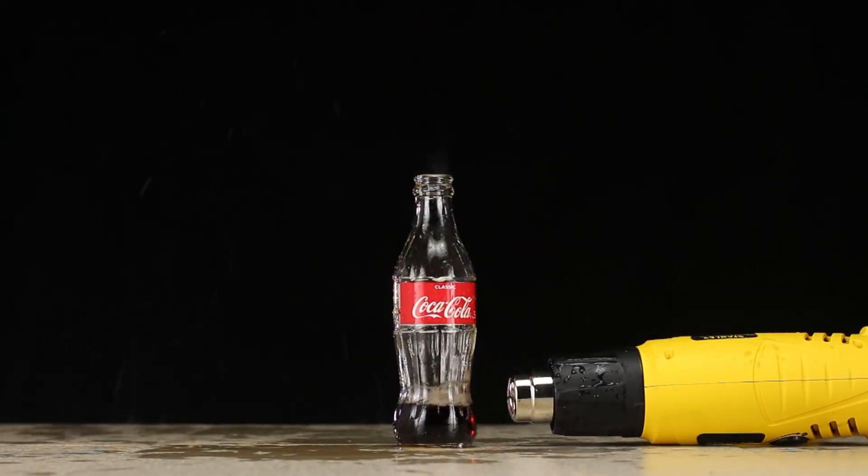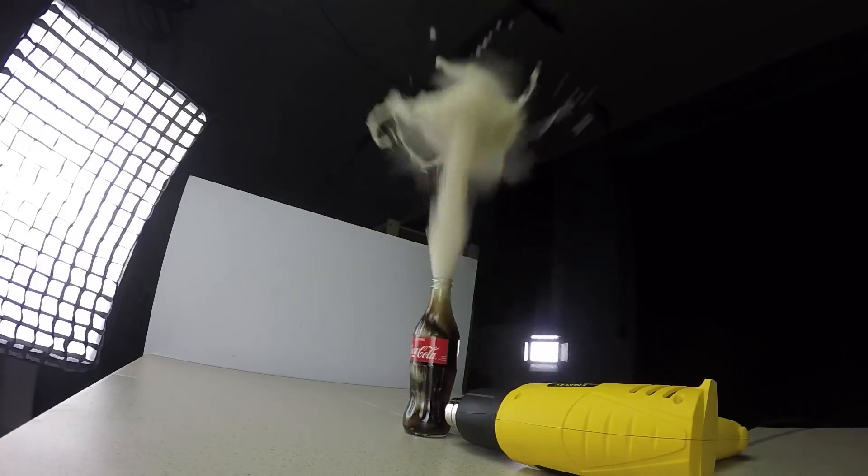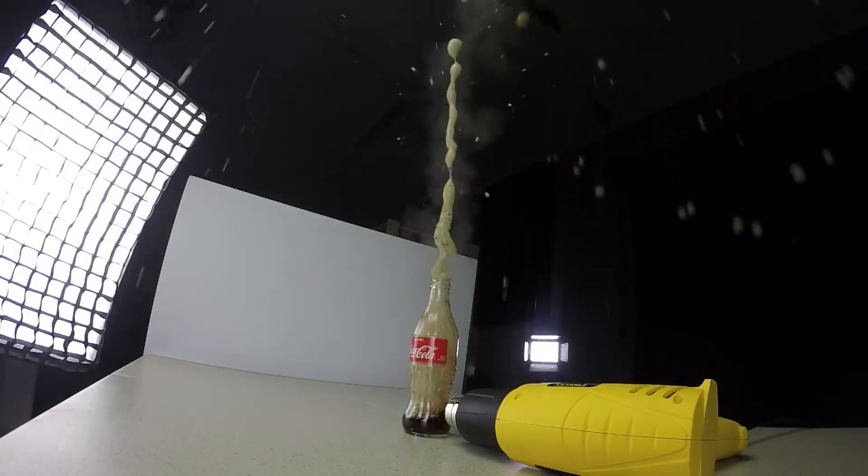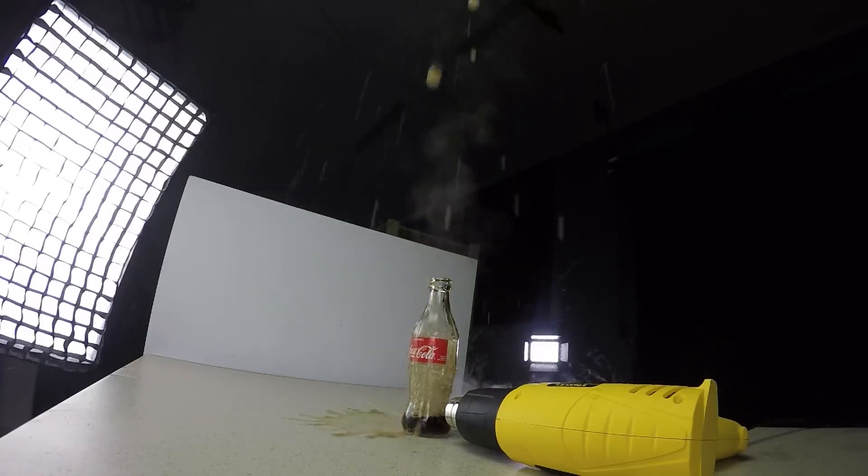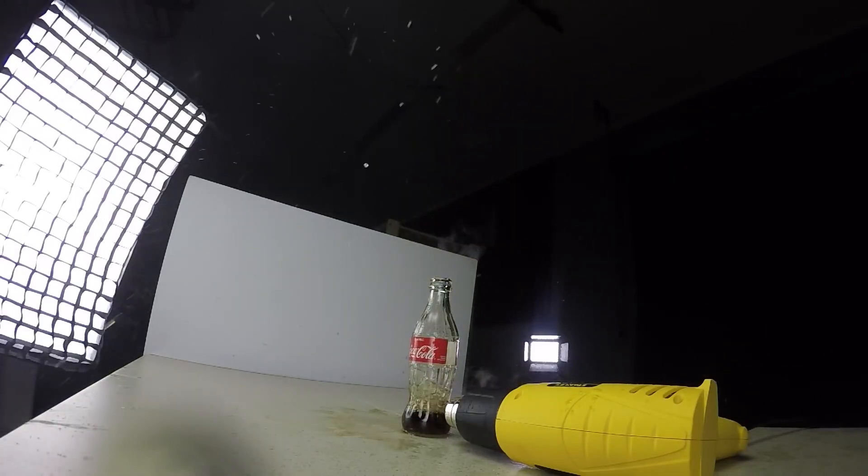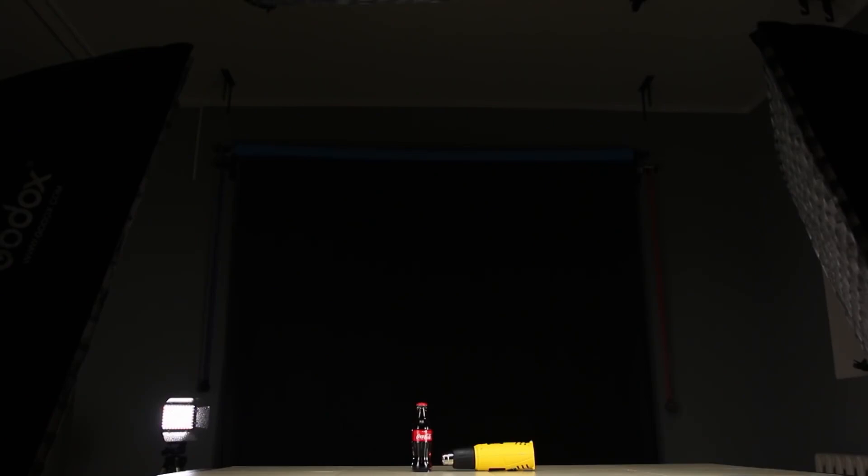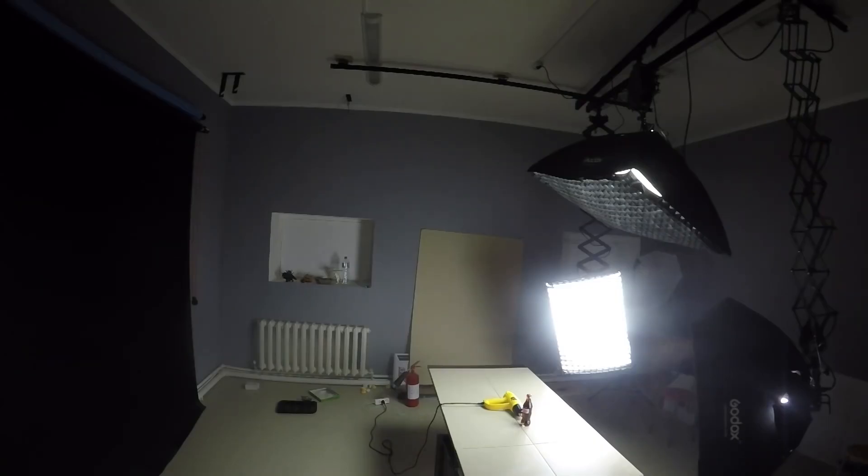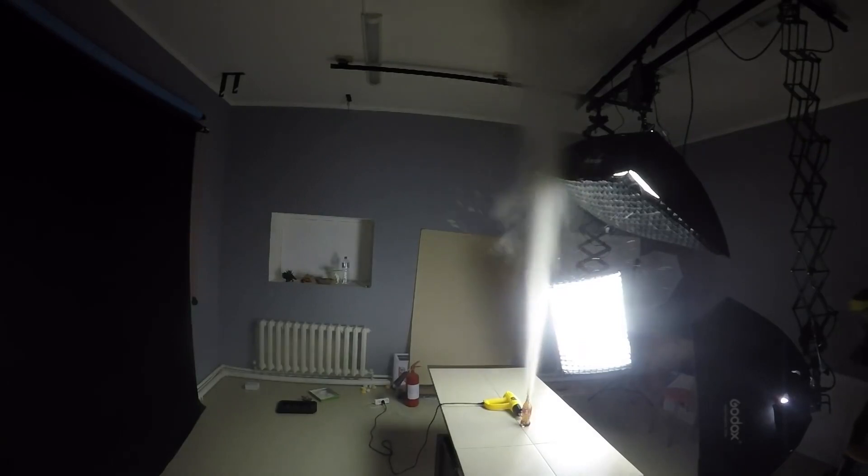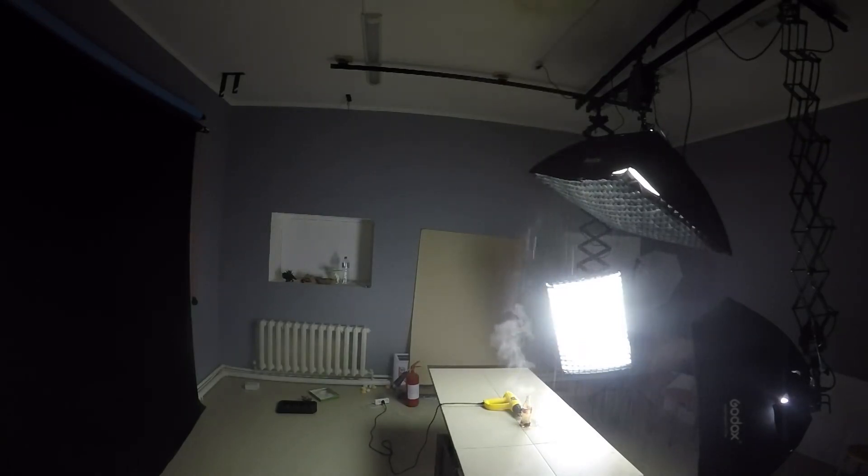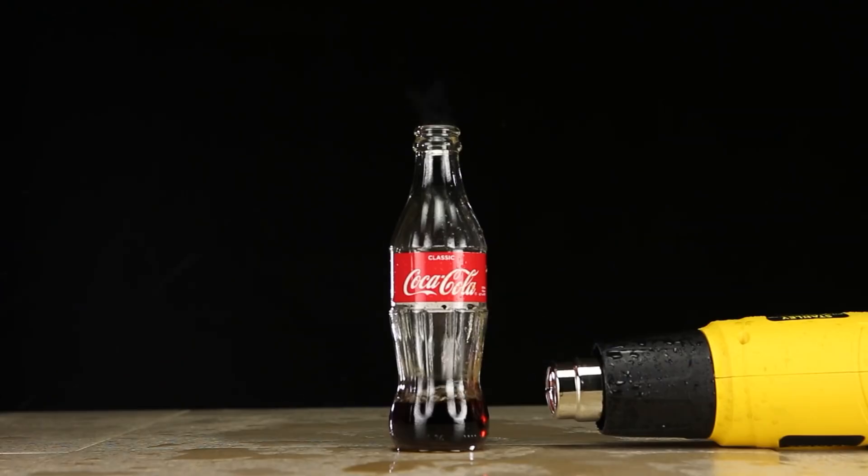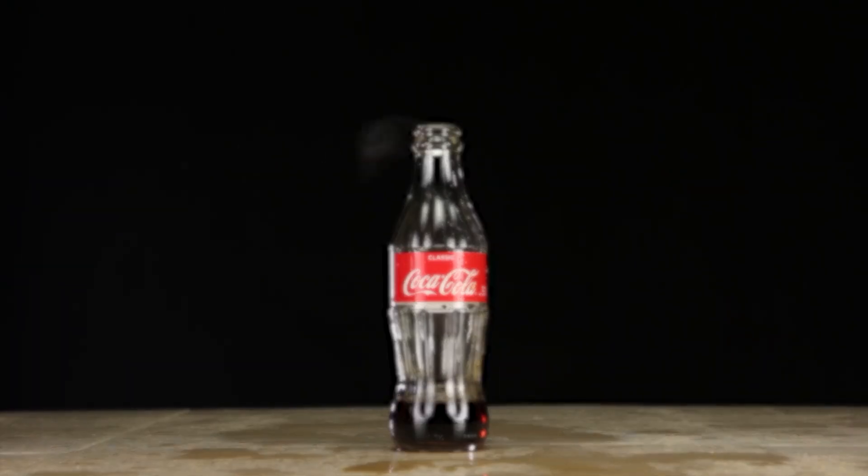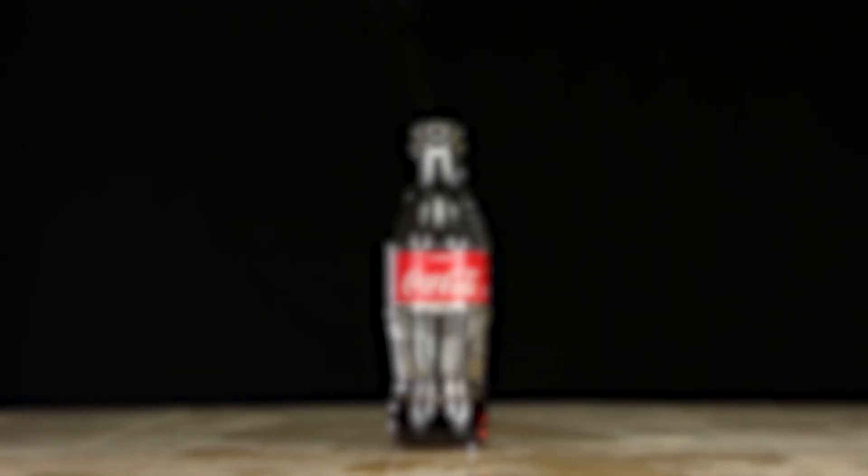A huge fountain of cola shoots out of the bottle, knocking out the cork. Look how beautiful it looks in slow motion. The foam hits the ceiling, scattered all over the studio. The fountain turned out really huge. And then it turned into a rain of cola. Look how little cola is left in the bottle. Almost all of it was released after heating.